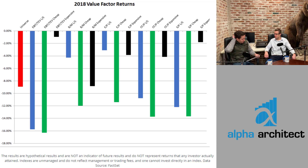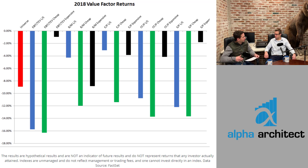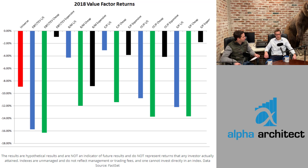Most factor investors don't do a long-short portfolio — they're going to do a long-only where you get a tilt. Because the biggest factor — we always spend all this time talking about factors — but the biggest factor is just beta. So when you do a long-short value factor, you're removing beta. You're trying to exclude down to just the value factor. You're attempting to do that.